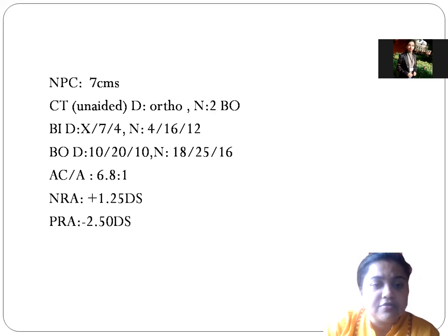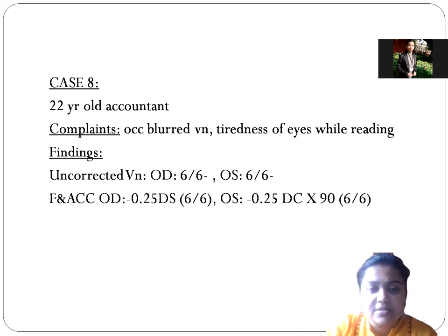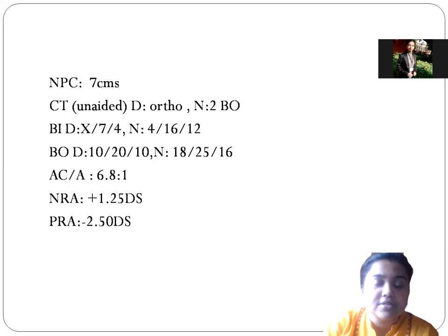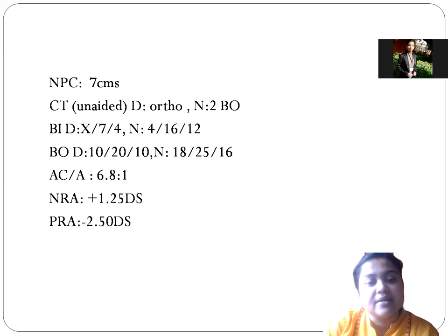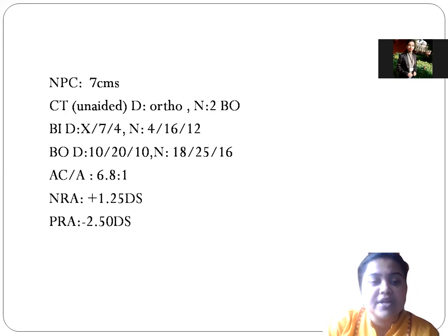So will you give this minus 0.25 correction to the patient? No need, because there is 2 prism esophoria at near. If you give minus lenses, you are pushing the accommodation, which will worsen the phoria because the AC/A ratio is quite high at 6.8:1 — 6.8 prism of esophoria will be generated per diopter. So with already 2 prism esophoria present, it is better not to give minus lenses.